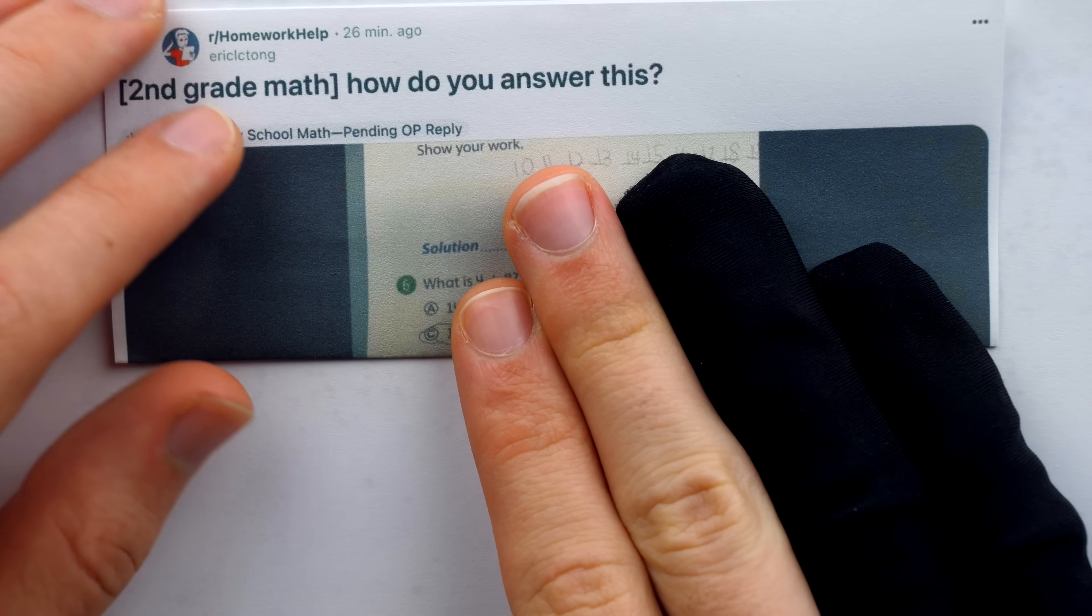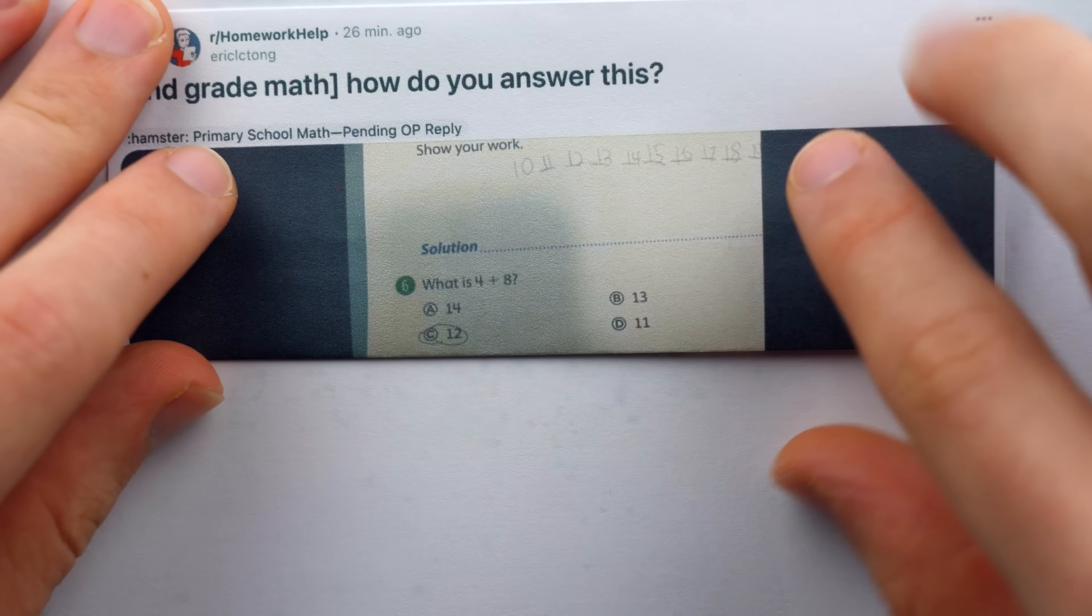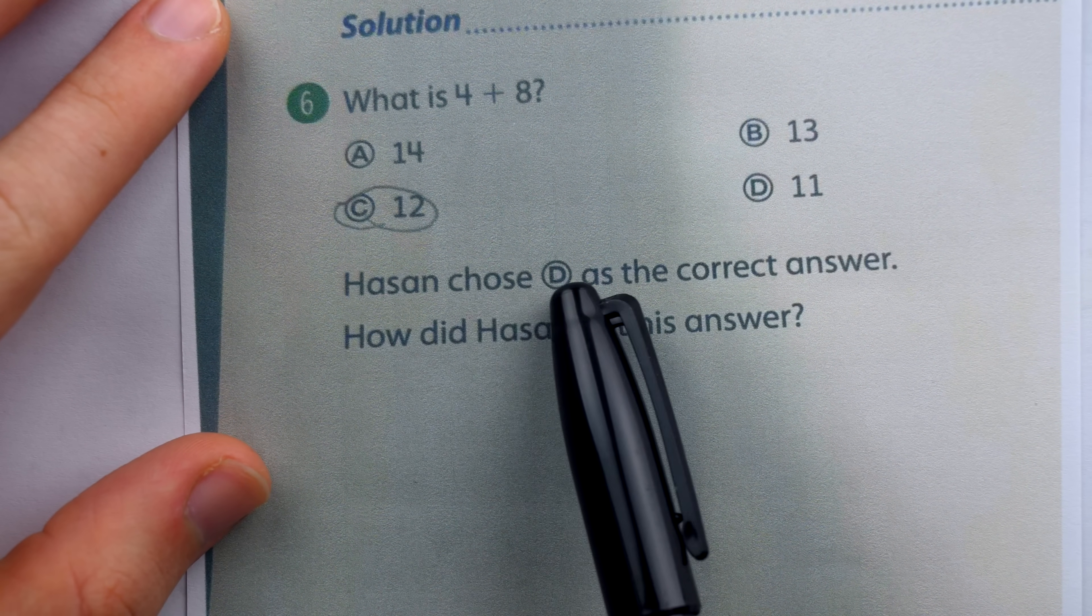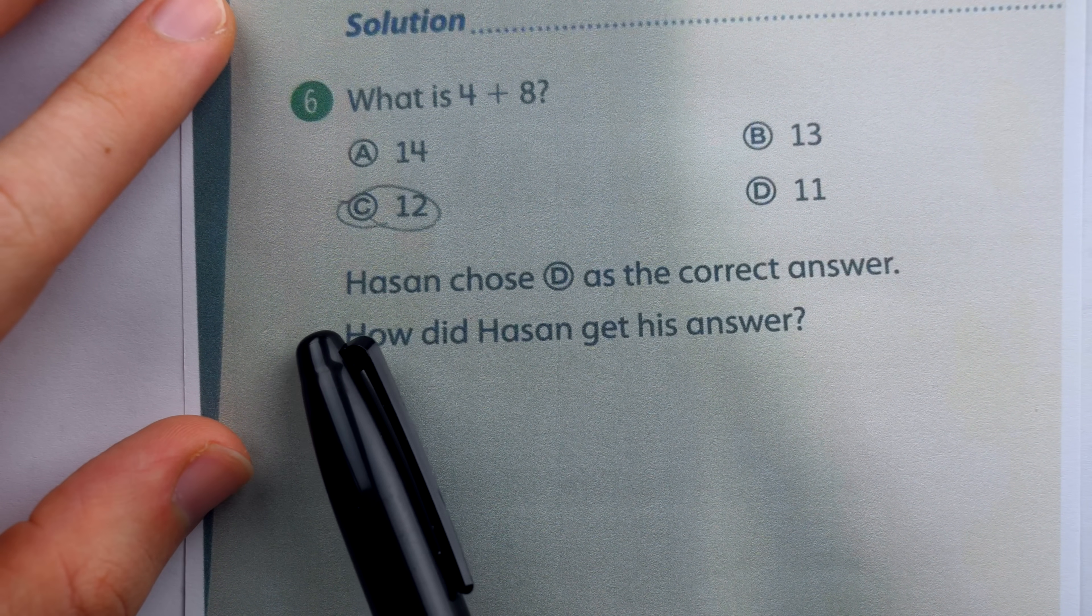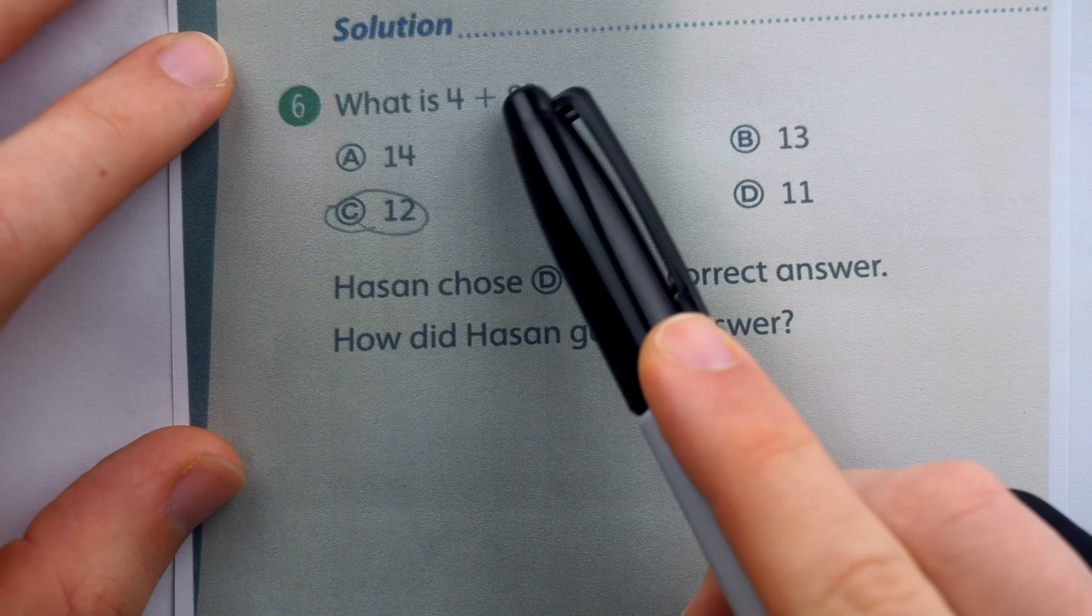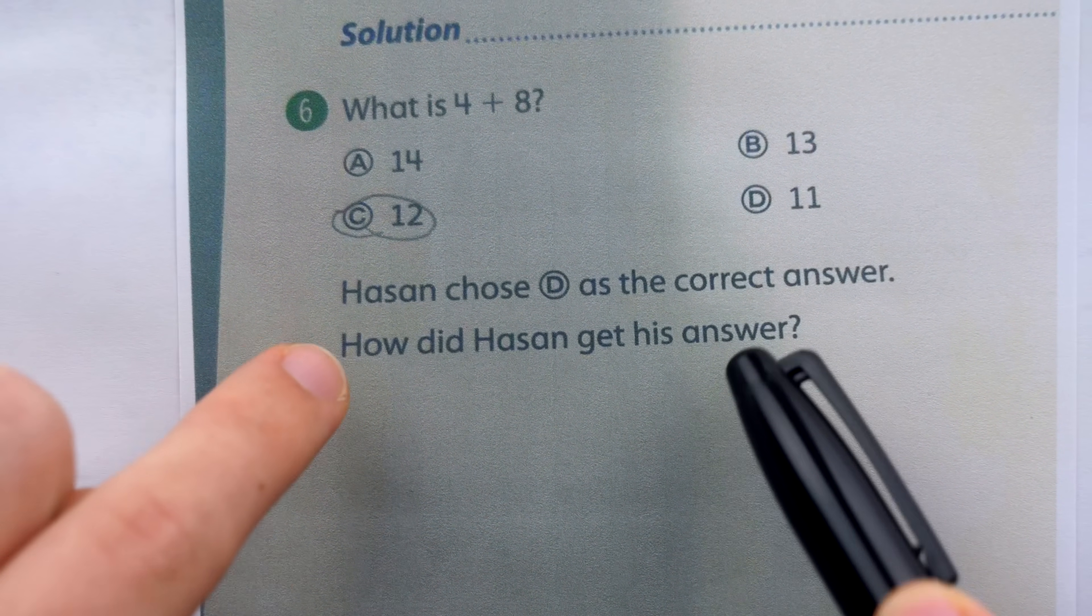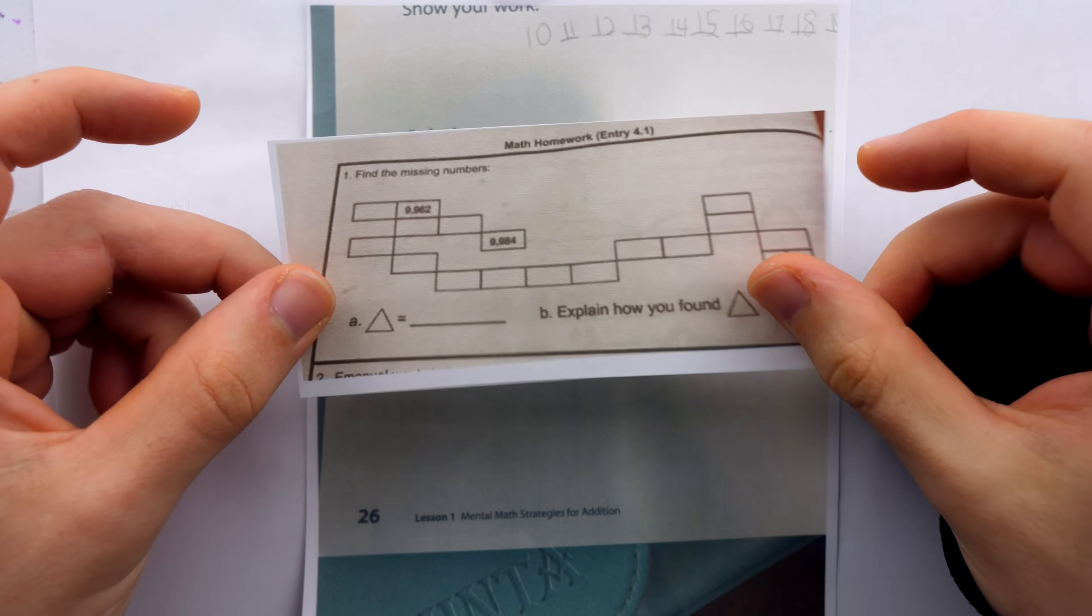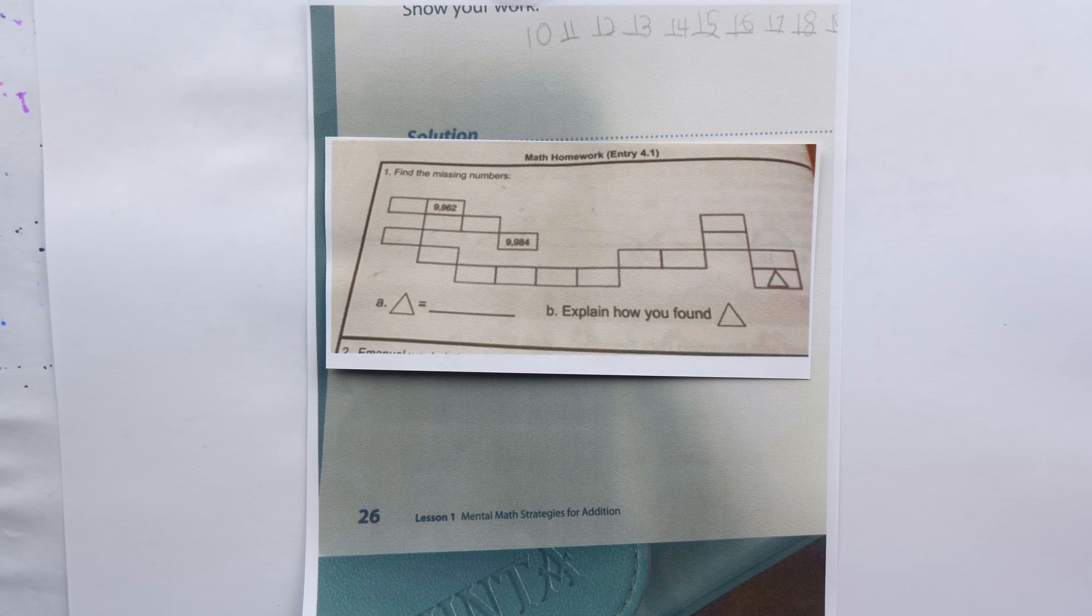It's a short answer question. This is basically just a figure which is part of the real question. Hassan chose D as the correct answer. How did Hassan get his answer? That's right. Hassan says 4 plus 8 is 11. Why does Hassan think this?